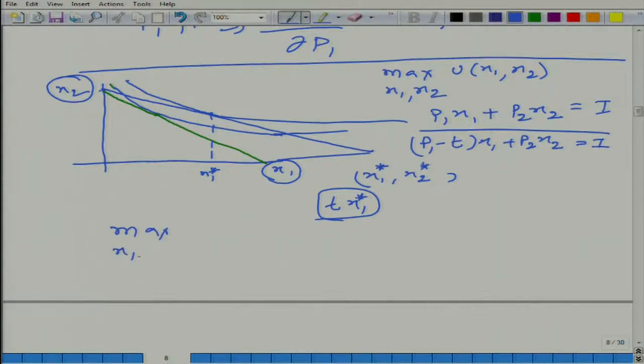Rather than paying the full price when you buy gas cylinder, government says: instead of giving you subsidy on gas cylinder, I give you subsidy on income in the sense that I make some cash transfer to you. In that case, the problem becomes: maximize u(x₁, x₂) such that p₁x₁ + p₂x₂ = I + tx₁*, and this is fixed. How can we get tx₁*? Because government is moving from specific subsidy to cash transfer, government knows x₁* - how many cylinders people are buying in general. So this is known.